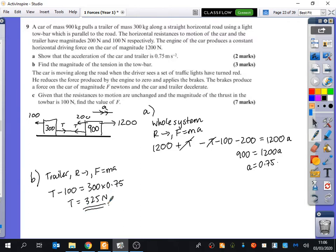If you wanted to check your answer, what could I do? You can use the car. I'm not going to do that, but very quickly, if we did 1,200 minus 200 minus 325, I'm guessing that's going to be 900 times 0.75, because we know that F equals MA.